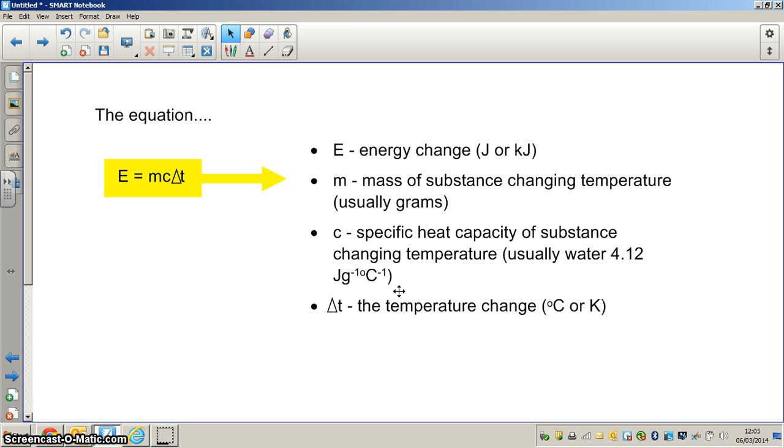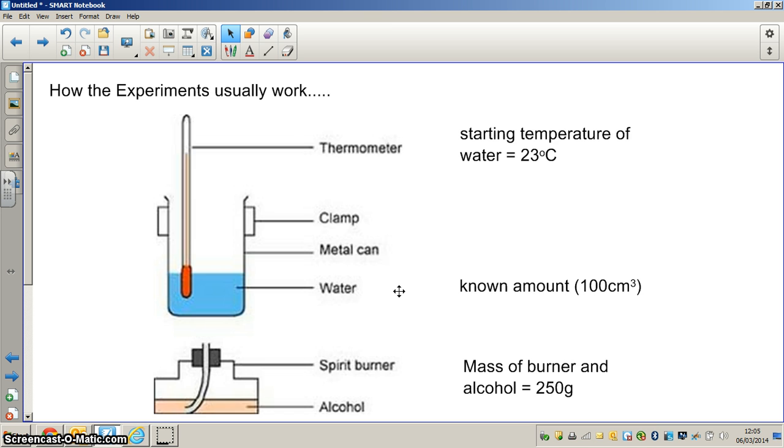Moving on, let's look at a typical experiment setup. We have usually a metal can which is called a calorimeter. We put a known amount of water into the can, and in this case I've given an example of 100 centimeters cubed. We put a thermometer into the water and it is very important that we keep the end of the thermometer off the base of the can, because what we are going to do is burn alcohol or fuel in the spirit burner and this is going to heat up the can and the water.